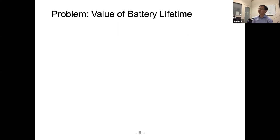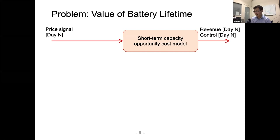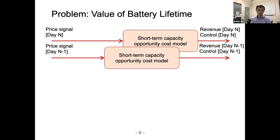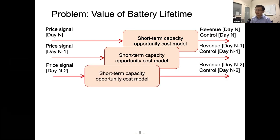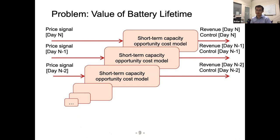Starting from daily operation: we consider a short-term capacity opportunity cost model — given the price forecast for the day, it generates revenue and control output. We can go one day prior and couple consecutive days, since the energy left from yesterday is the starting energy for today. This is a coupled sequential operation problem, similar to inventory management or hydro storage planning.